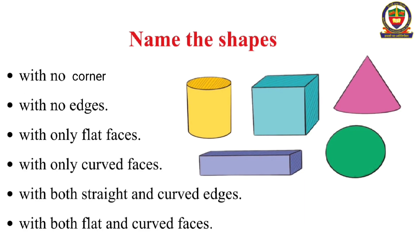Here are some shapes — name the shapes. With no corners: sphere. With no edge: sphere. With only flat faces: cube and cuboid. With only curved faces: sphere. With both straight and curved edges: cone. With both flat and curved faces: cylinder.